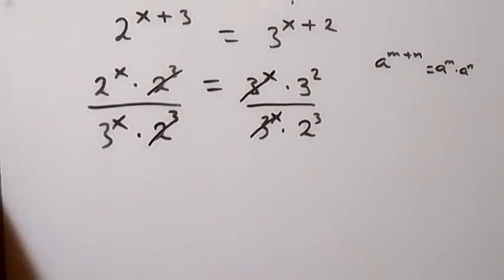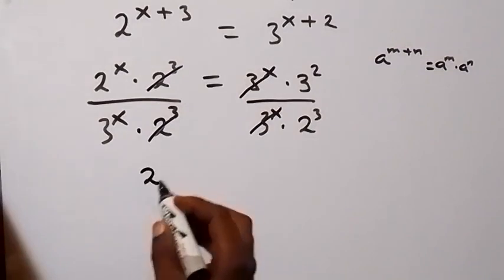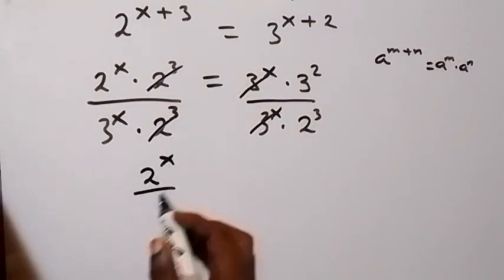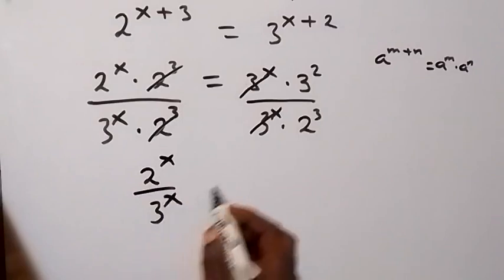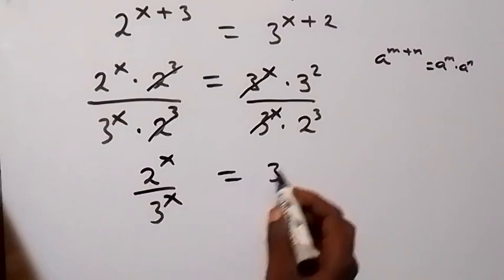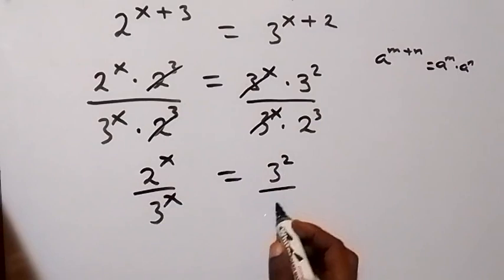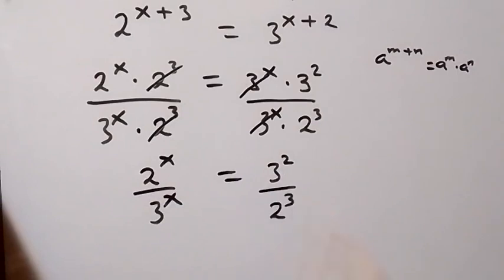So what we have left here will become 2 to power x over 3 to power x, which is equal to 3 squared over 2 raised to power 3.